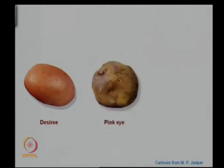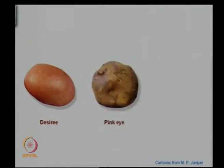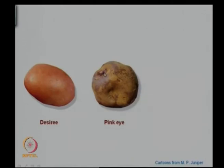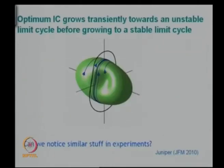We look at different topologies — this is the cartoon given by Juniper, showing different types of potato shapes. This one does not have any groove inside. But here you can see grooves where if the unstable limit cycle is lying on this topology, you could still be inside the pit and have lower energy. Topologies can be quite complicated.